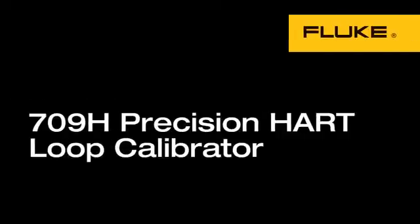The Fluke 709 loop calibrators are a new, easy-to-use family of accurate and dependable loop calibrators. The 709 is a precision loop calibrator and the 709H adds HART communication.